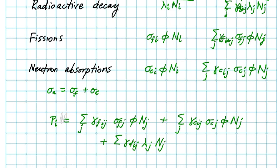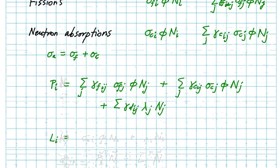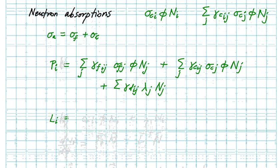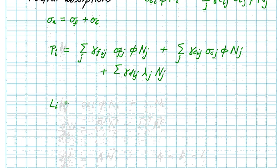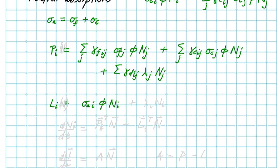Then the loss side, the loss term is easier to write with no summations. The losses just appear on the diagonal. We can combine the fission and capture into the absorption: sigma_a for i times the flux times N_i plus the decay lambda_i N_i.